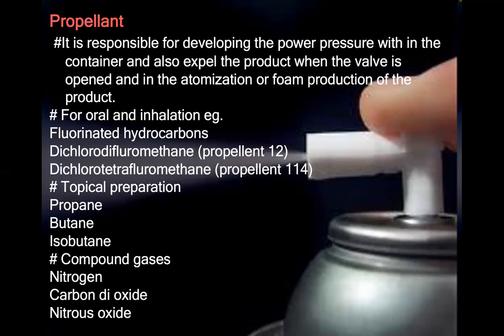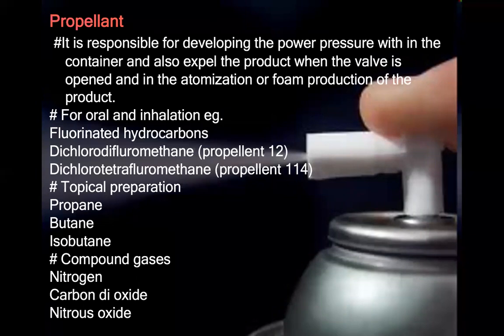For oral and inhalation use, propellants include fluorinated hydrocarbons, dichlorodifluoromethane (Propellant 12), and dichlorotetrafluoromethane (Propellant 114). For topical preparations, the propellants used are propane, butane, isobutane, compound gases, nitrogen, carbon dioxide, and nitrous oxide.